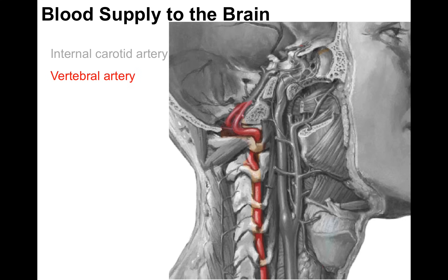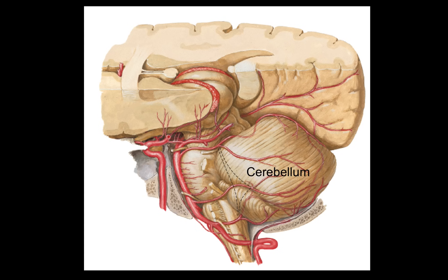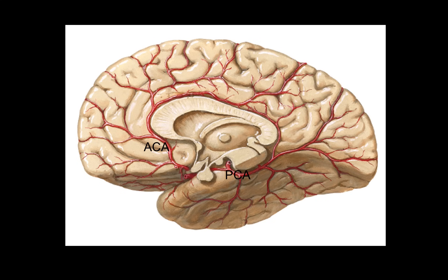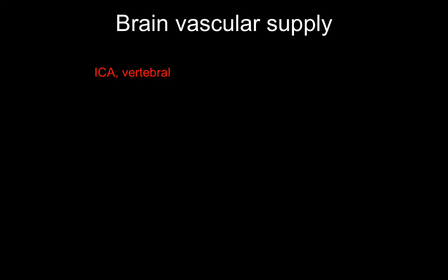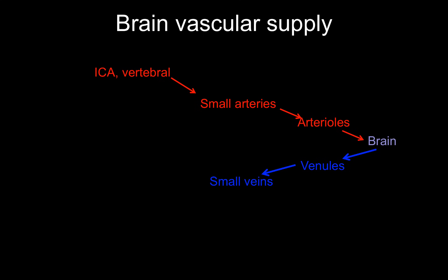The vertebral artery courses through the transverse foramina of the cervical vertebrae and through the foramen magnum to the back of the brain. It supplies the cerebellum via the posterior inferior cerebellar artery, anterior inferior cerebellar artery, and superior cerebellar artery. Cranial nerve III separates the superior cerebellar artery from the posterior cerebral artery. In conclusion, the internal carotid and vertebral arteries supply the brain; capillaries drain into venules and then small cerebral veins, which empty into dural venous sinuses, which ultimately drain into the internal jugular vein back to the heart.